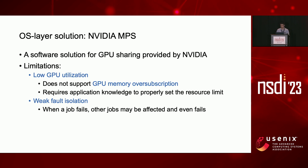NVIDIA MPS is an OS layer solution for GPU sharing. MPS only provides performance isolation for compute resources by setting a static resource limit per process that cannot be changed after starting. The resource limit covers only GPU compute resources, not GPU memory. MPS requires the total GPU memory of all processes to be within GPU memory capacity. Another limitation is that MPS does not provide fault isolation — it merges the CUDA contexts of multiple processes into a single CUDA context. When a process fails, it leaves MPS runtime and other processes in an undefined state, potentially causing process hangs, corruptions, or failures.